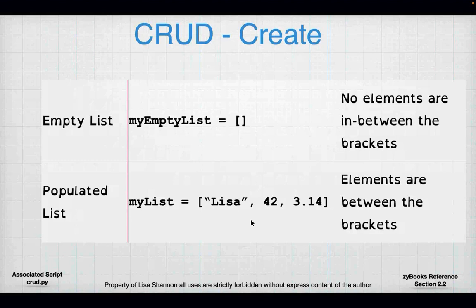Let's look at Create. If I want to create an empty list, I have a variable on the left-hand side of a single equal sign — in this case, myEmptyList — and on the right-hand side just an opening and closing square bracket. That means the list exists but there's nothing in it. A populated list is a list with data elements in it: mylist on the left-hand side, and on the right an open square bracket, the word Lisa, number 42, number 3.14, and a closed square bracket. Python doesn't care how you create it as long as the syntax is correct.